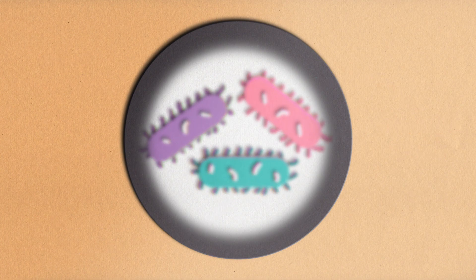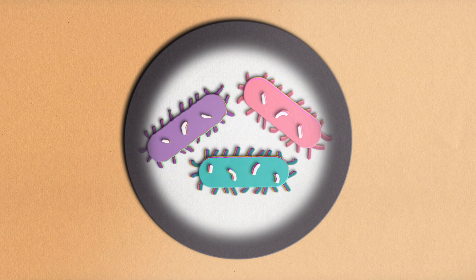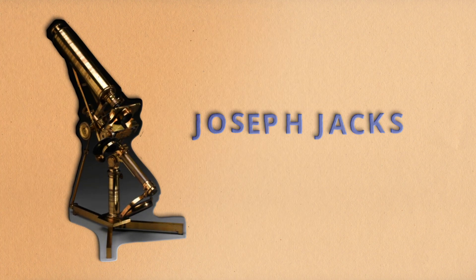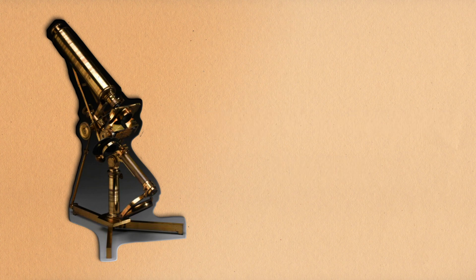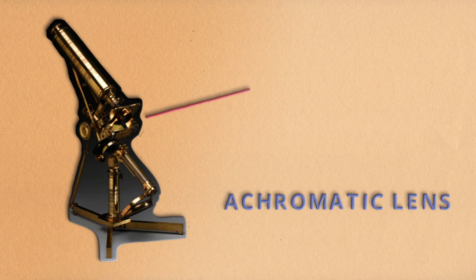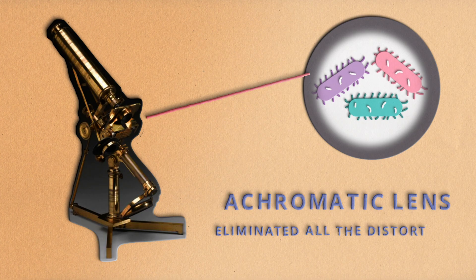This was the primary reason why medical doctors back then did not fully trust what they saw under a microscope. However, Joseph Jackson Lister improved on this version of the microscope and developed an achromatic lens which eliminated all distortions, colored edges, and halos.